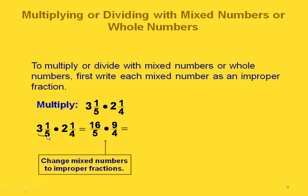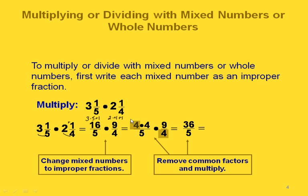3 and 1 fifth — we multiply the whole number times the denominator of the fractional part, which gives us 15, and then we add the numerator. So 3 times 5 plus 1 gives us 16. We have the same denominator, so 3 and 1 fifth is 16 fifths. For 2 and 1 fourth, the 9 is 2 times 4 plus 1. So now we just have 16 fifths times 9 fourths. We can factor 16 as 4 times 4, cancel the 4s in common, leaving 4 times 9 equals 36 on top and 5 on the bottom, giving us 36 fifths, or as a mixed number, 7 and 1 fifth.